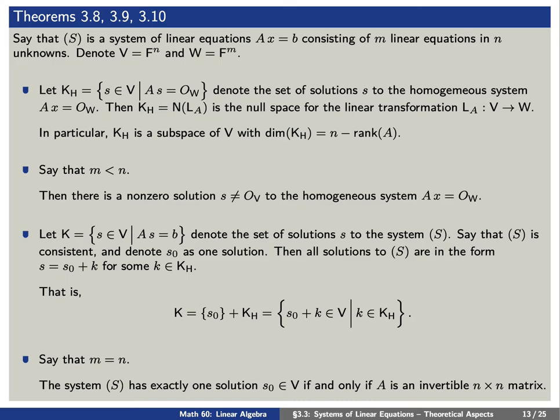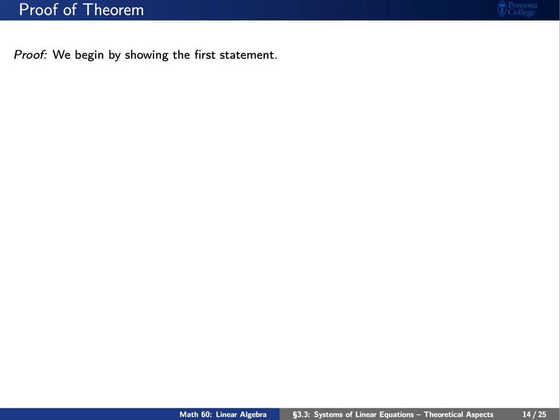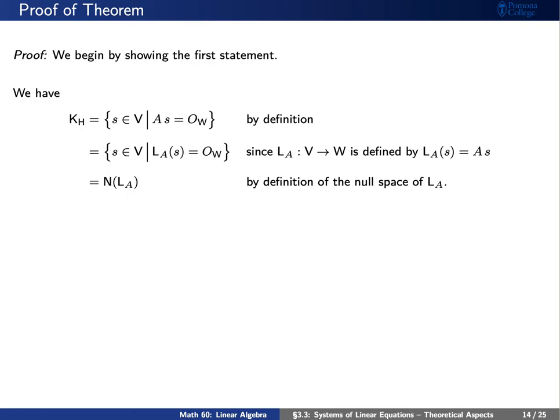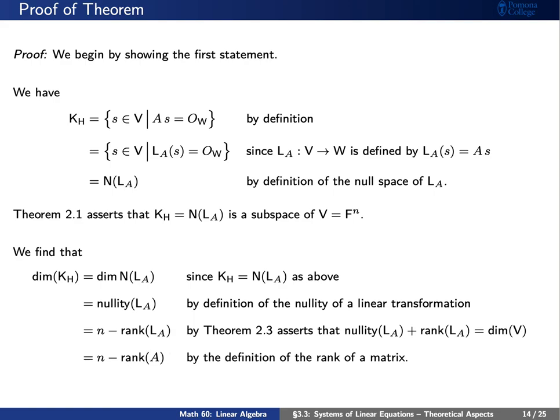Let's discuss the proofs. For the first statement, recall that K sub H is the set of solutions to A times X equals the zero vector. But A times X is the same as left multiplication by A on a vector X, so K sub H is just the null space of L sub A in disguise. Since it is a null space, it is a subspace of V, and its dimension is the nullity of L sub A. The dimension theorem tells us rank plus nullity equals N, so the dimension of K sub H is N minus the rank of A.